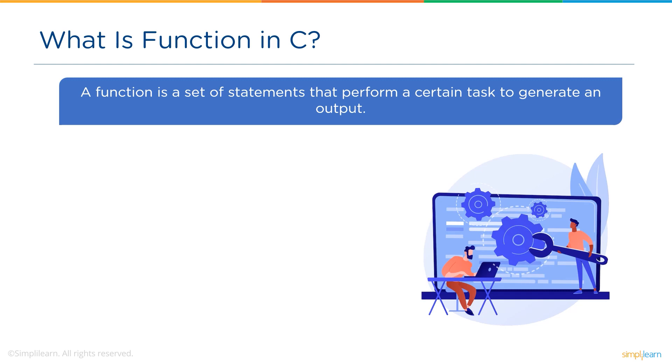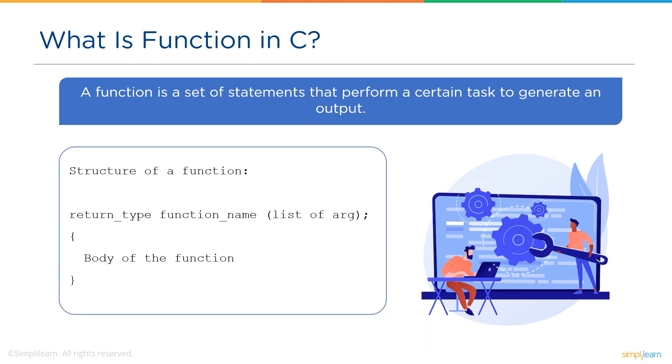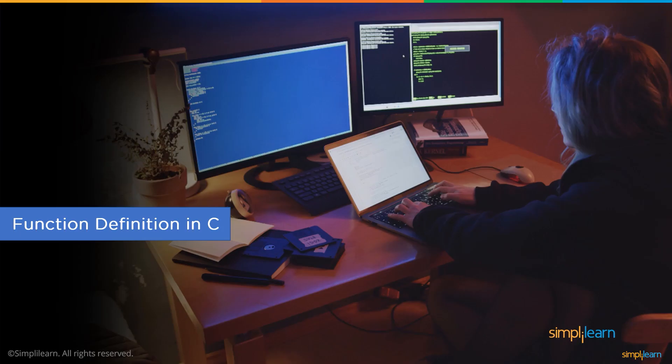Functions can be called n number of times and C allows multiple functions in a program. Now let's look at the structure of a function. In a function header we have return type, function name, and a list of arguments, and the body of a function inside the curly brackets. Now let's have a look at the function definition in C.